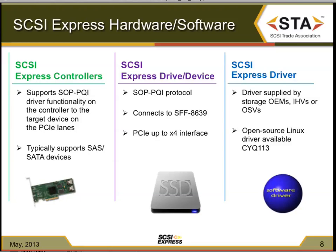SCSI Express drives will typically show up in a x4 interface, use the 8639 connector, and will typically come in the 2.5-inch form factor. Drivers for SCSI Express will typically be provided by storage OEMs, HBAs, and operating system vendors. Drivers have also been put into the Linux open-source environment — both a block driver and a SCSI class driver for Linux — and those are available and being worked on in the development community.